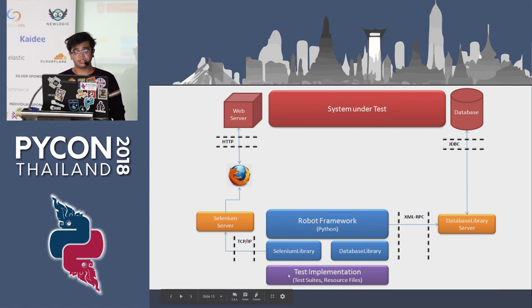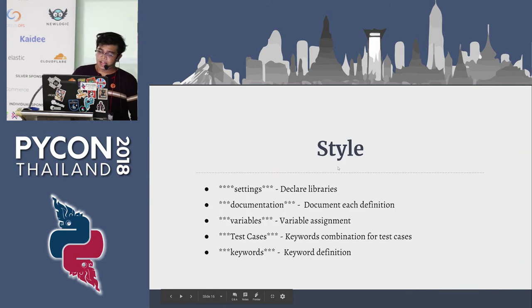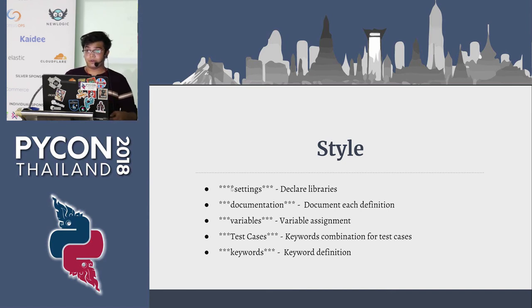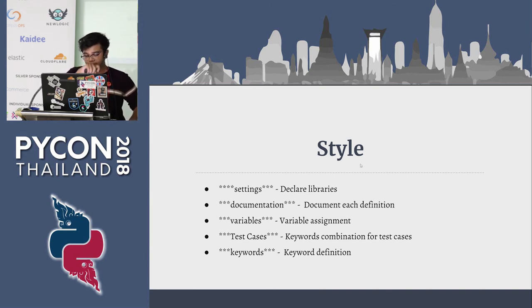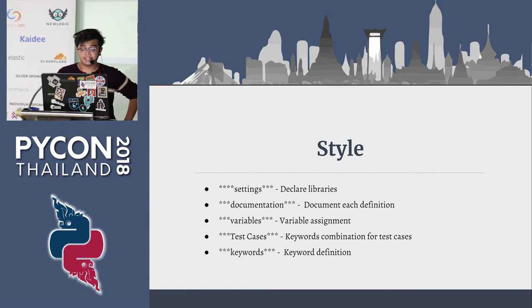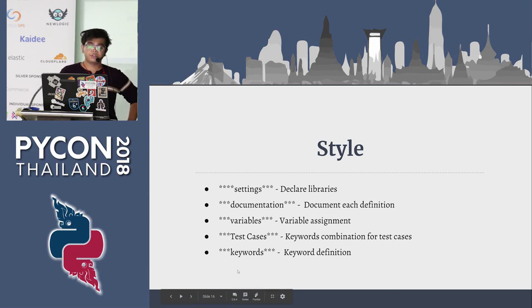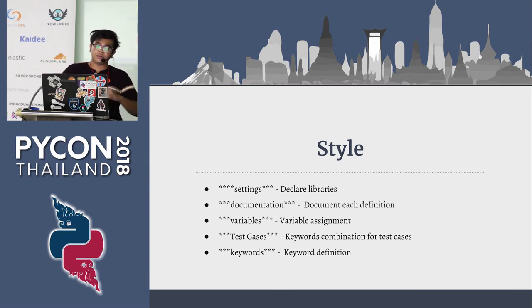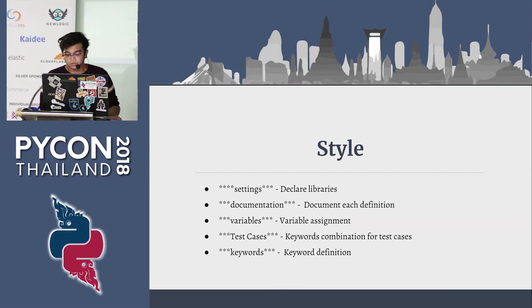Here you write the test implementation and test suites. In the settings section, you declare libraries and tweaks you want to make during the test case. Documentation is just documenting the test case. Variables are just variable assignments. For keywords, you define them to make sure they work using the built-in library functions. Then you use test cases to call those keywords and create readable, deployable definitions for the test scenario.